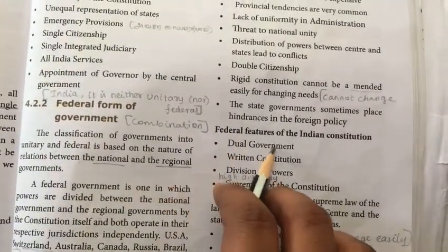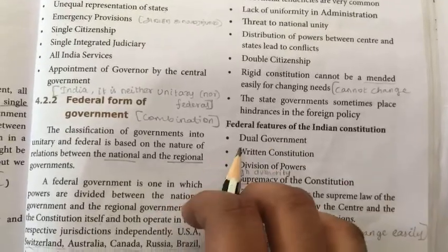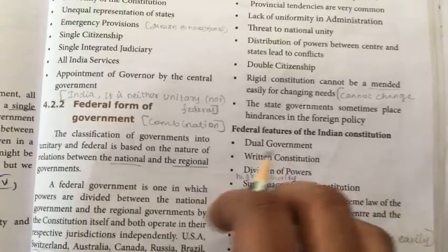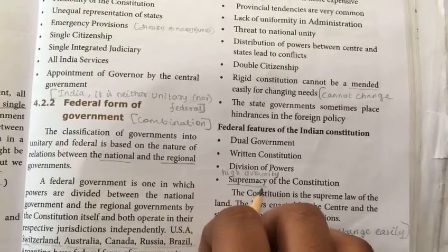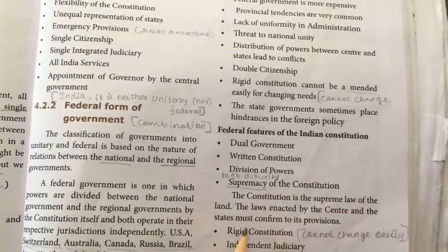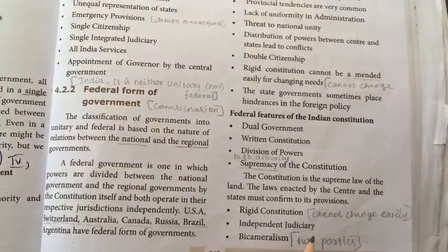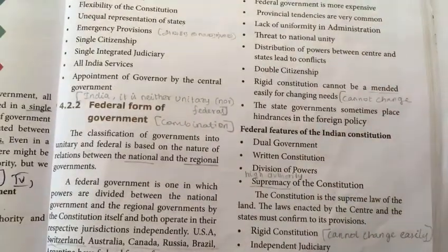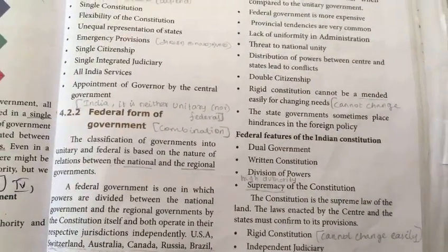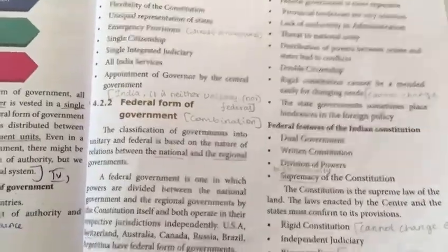Federal features of the Indian constitution include: dual government, written constitution, division of powers, supremacy of the constitution, rigid constitution, independent judiciary, and bicameralism — meaning two chambers or parties in the legislature.